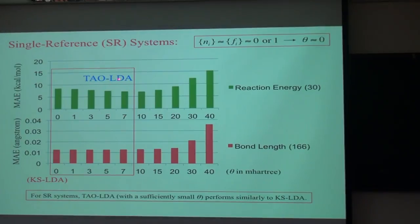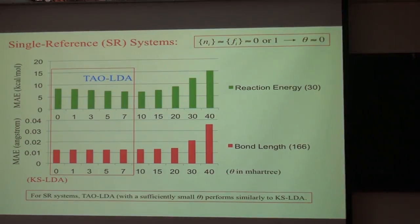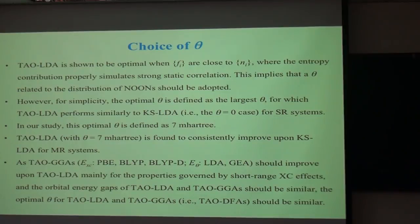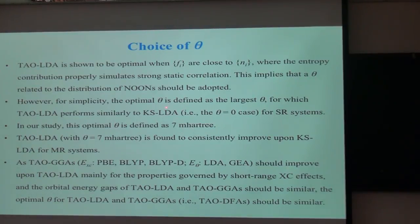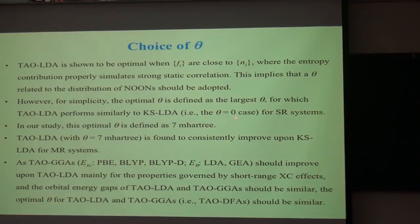Therefore, tau LDA with an effective temperature C_dot as large as 7 milli-Hartree still performs similarly to constrained LDA. The choice of C_dot is related to the distribution of natural orbital occupation numbers. For a single-reference system, the optimal C_dot is defined as the largest C_dot for which tau LDA performs similarly to constrained LDA, i.e., the C_dot equal to zero case.